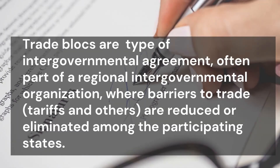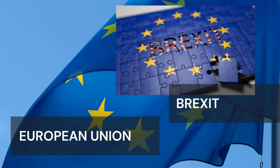Aside from free trade, one way to make trade easier is through trade blocs — intergovernmental agreements, often part of a regional organization, where trade barriers are reduced or eliminated among participating states. The European Union, or EU, is the world's largest trading bloc and second largest economy after the USA. Its five largest economies — Germany, France, the United Kingdom, Italy, and Spain — account for around 70% of the 28-country bloc. In June 2016, the United Kingdom left the EU in what was known as Brexit.